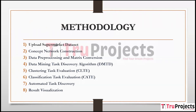Coming to methodology, the first design module is concept network construction. A directed graph representation called the concept network is constructed, consisting of concepts as nodes and concept pairs as edges. Each concept represents a real-world object and the associated concept pairs represent attributes that affect the concept. For example, in a supermarket dataset, 'product' is a concept, and product ID, product name, and price are the concept pairs. The second module is data pre-processing and matrix conversion, where the dataset is cleaned, missing values are handled, and data consistency is ensured before converting it into matrix form.